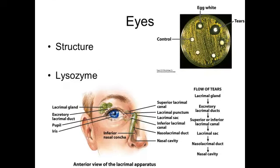Before we jump into those different plants, I wanted to take a moment to discuss a little bit about the anatomy of the eye. As you can see here in this picture, the eye has a lot of surrounding glands and lacrimal glands and ducts associated with the lacrimal process or tear formation process. There is a flow of tears that generally follows this pathway of going from the lacrimal gland into the excretory ducts, into the superior or inferior lacrimal canals, the lacrimal sac, and then the nasolacrimal duct and nasal cavity.